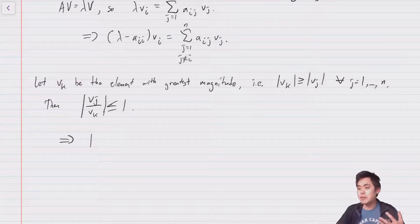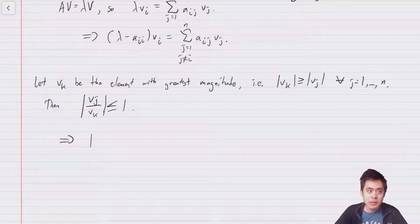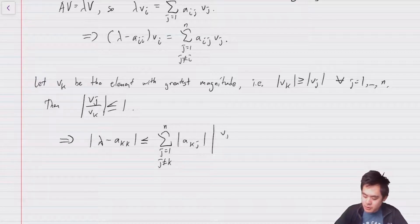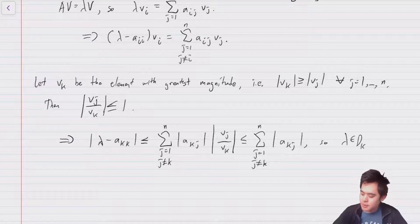Which then implies that if you take modulus of everything, take absolute values of everything and divide both sides by v_i, you get, so we're going to let i equal to k here. So |λ - a_{kk}| ≤ Σ(j≠k) |a_{kj}||v_j/v_k|. So of course that's less than equal to 1, so this entire thing is less than or equal to Σ(j≠k) |a_{kj}|. So therefore λ is in the disk k, the k-th Gershgorin disk, and this proves the theorem.